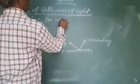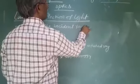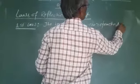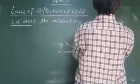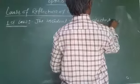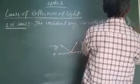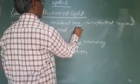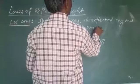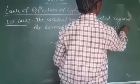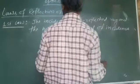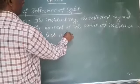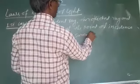The incident ray, the reflected ray, and the normal at the point of incidence, all lie in the same plane.